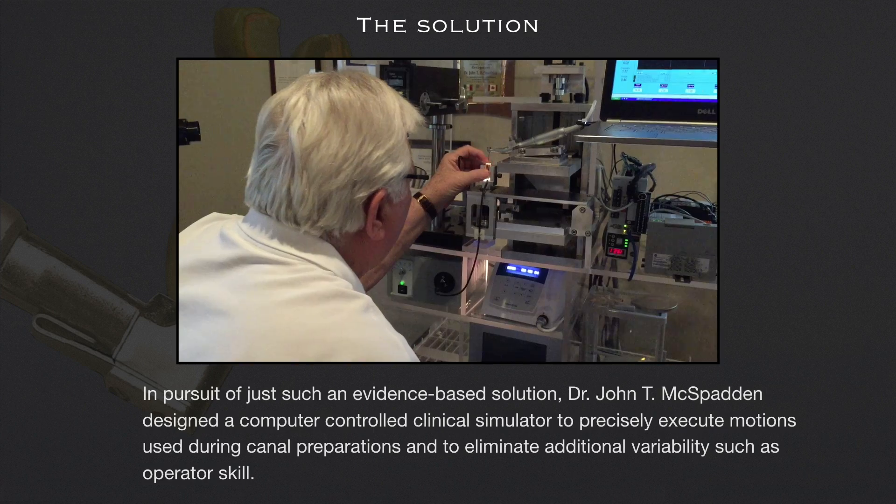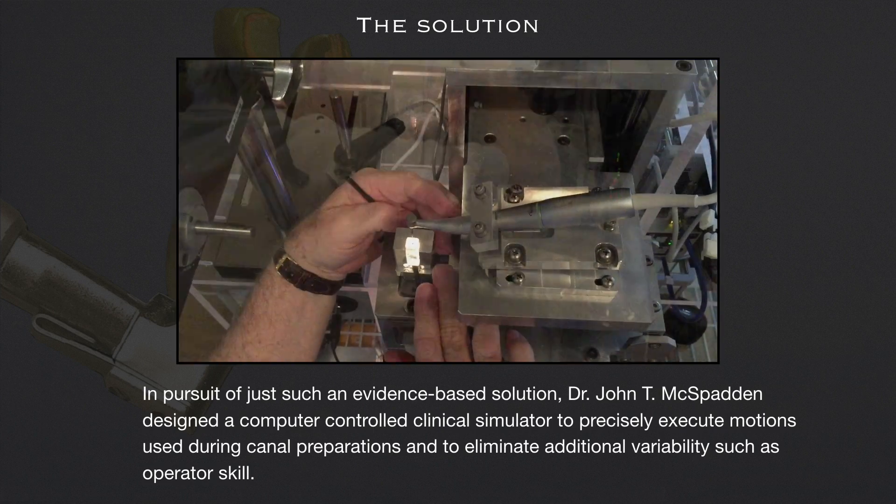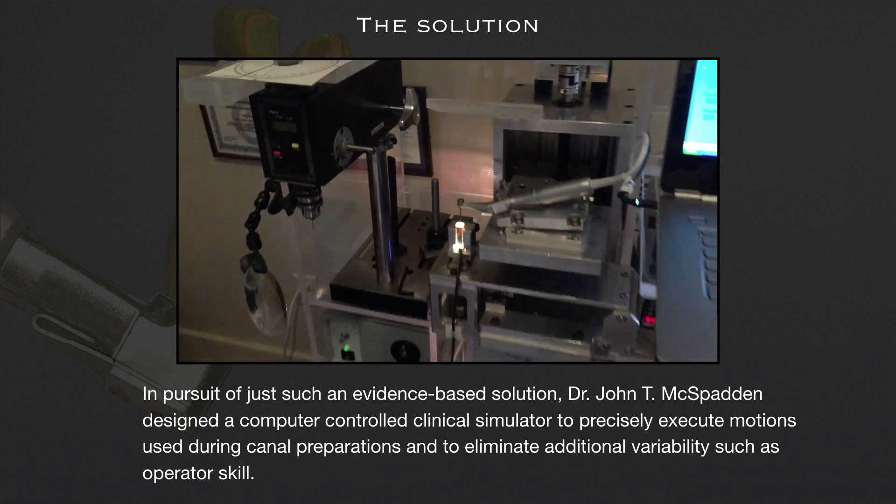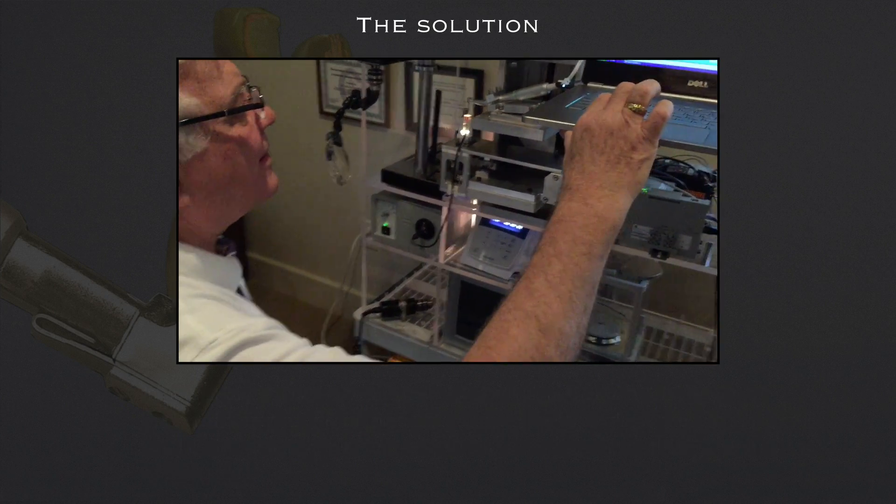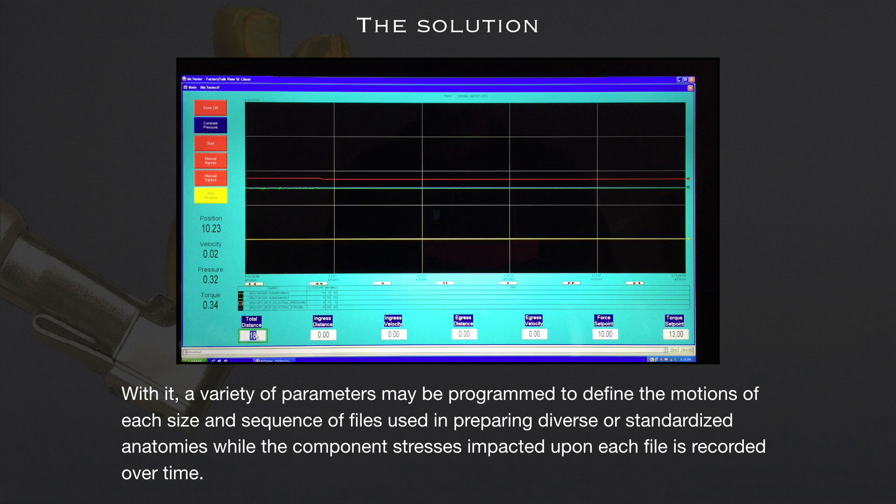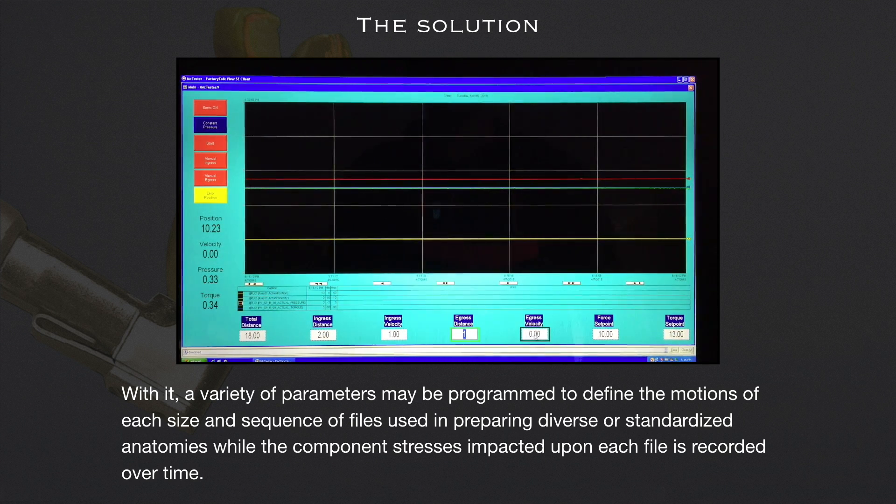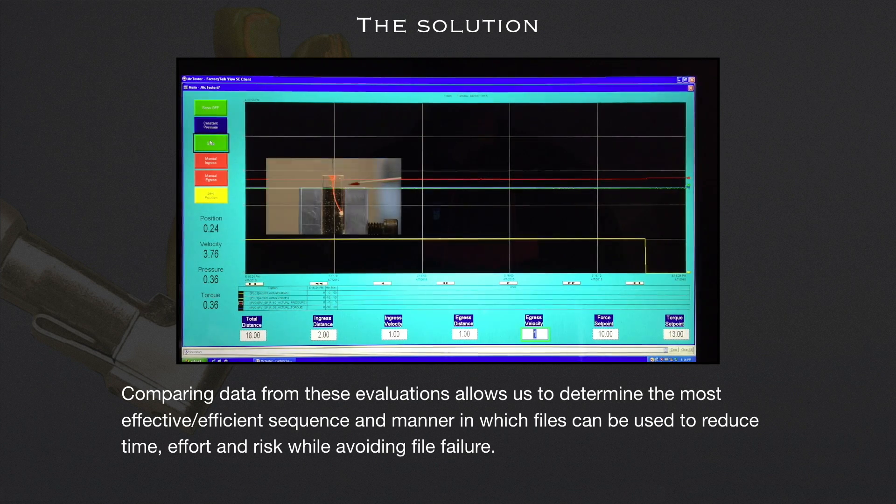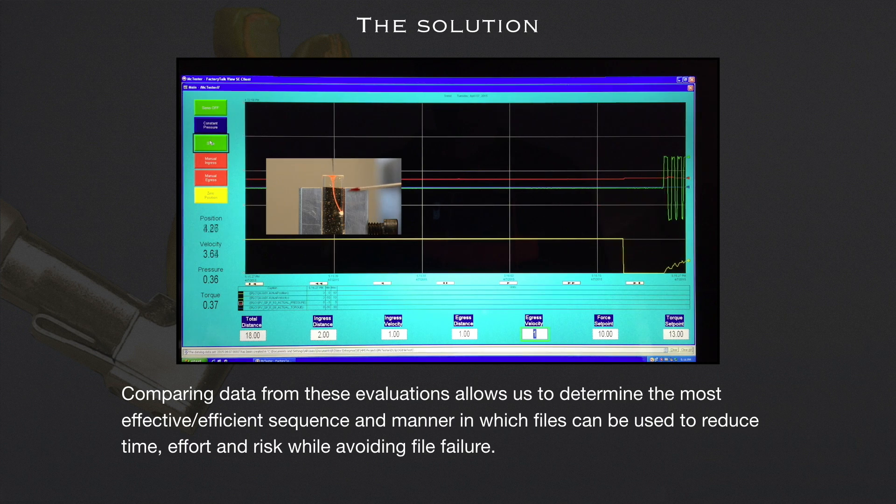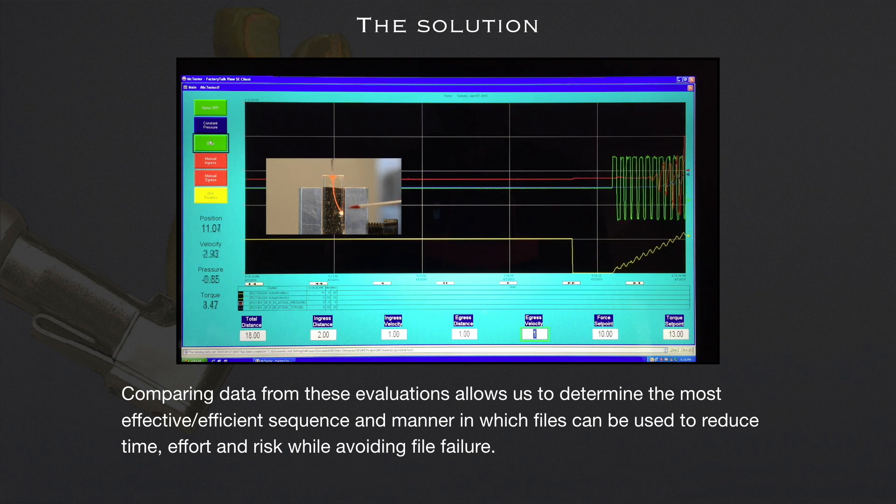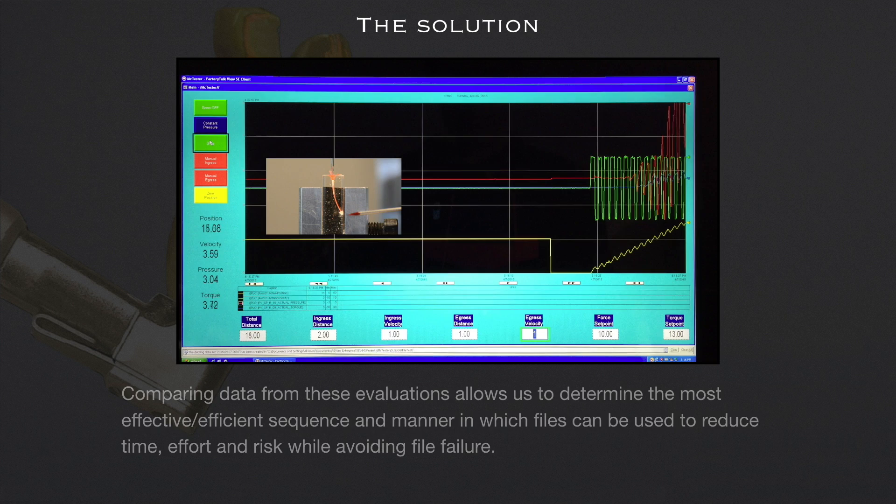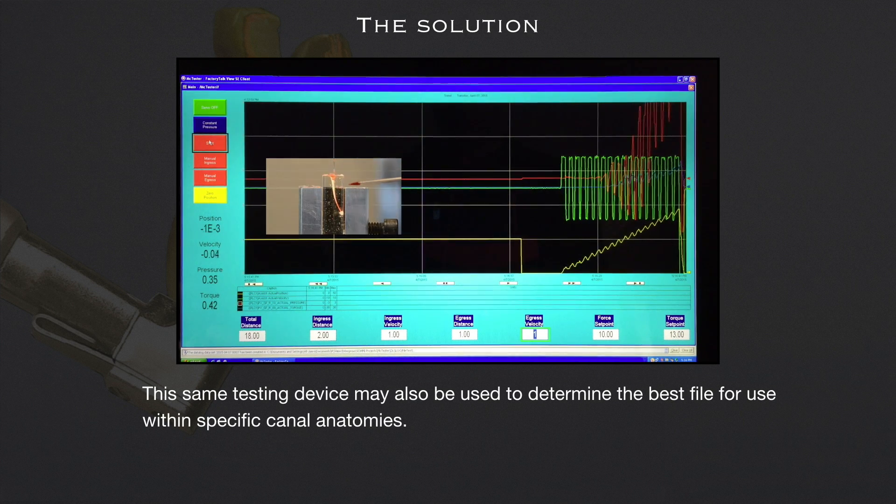In pursuit of just such an evidence-based solution, Dr. John McSpadden designed a computer-controlled clinical simulator to precisely execute motions used during canal preparations and to eliminate additional variability such as operator skill. With it, a variety of parameters may be programmed to define the motions of each size and sequence of files used in preparing diverse or standardized anatomies, while the component stresses impacted upon each file is recorded over time. Comparing data from these evaluations allows us to determine the most effective or efficient sequence and manner in which files can be used to reduce time, effort, and risk while avoiding file failure. This same testing device may also be used to determine the best file for use within specific canal anatomies.